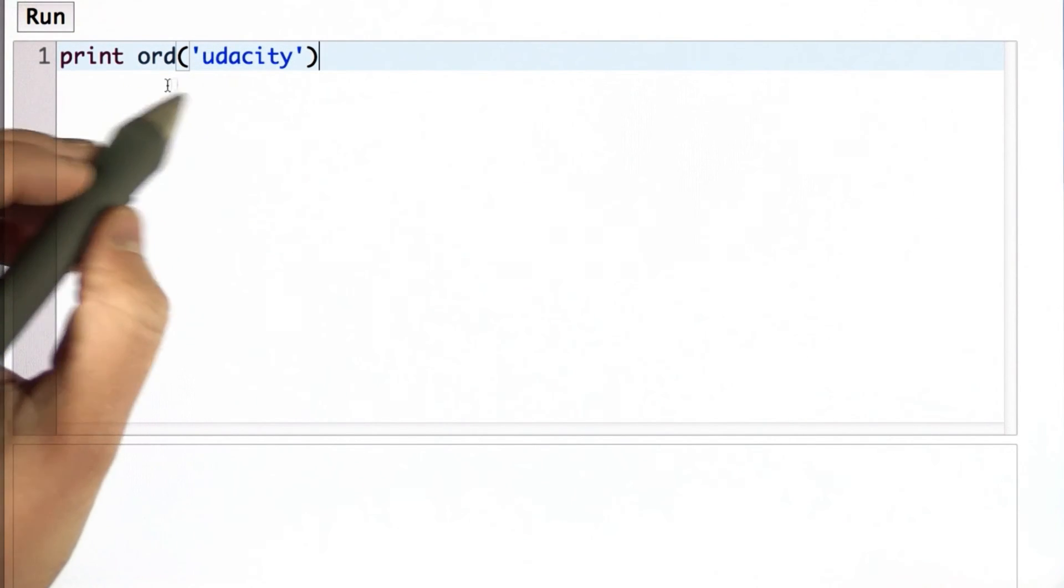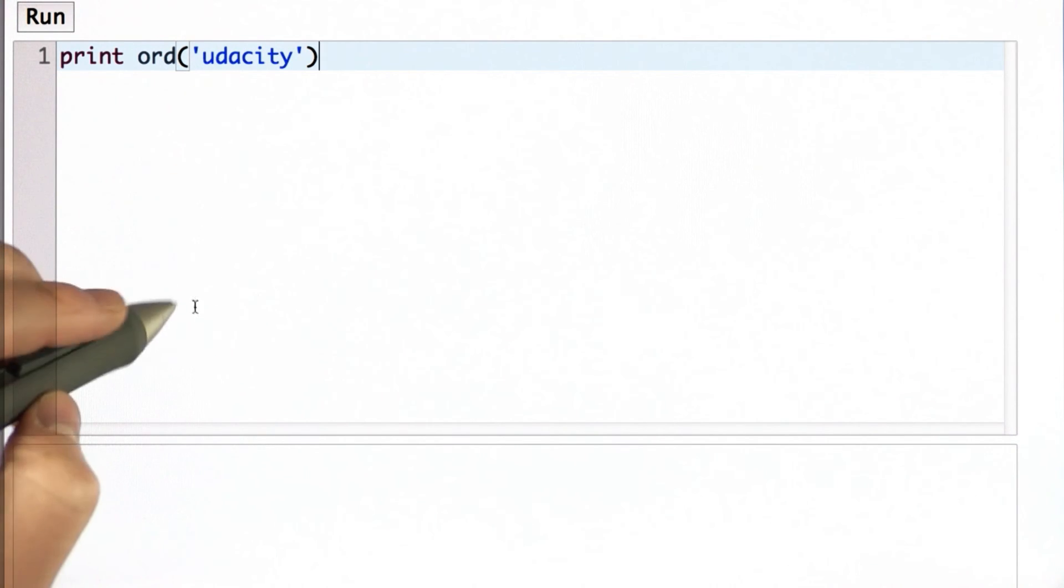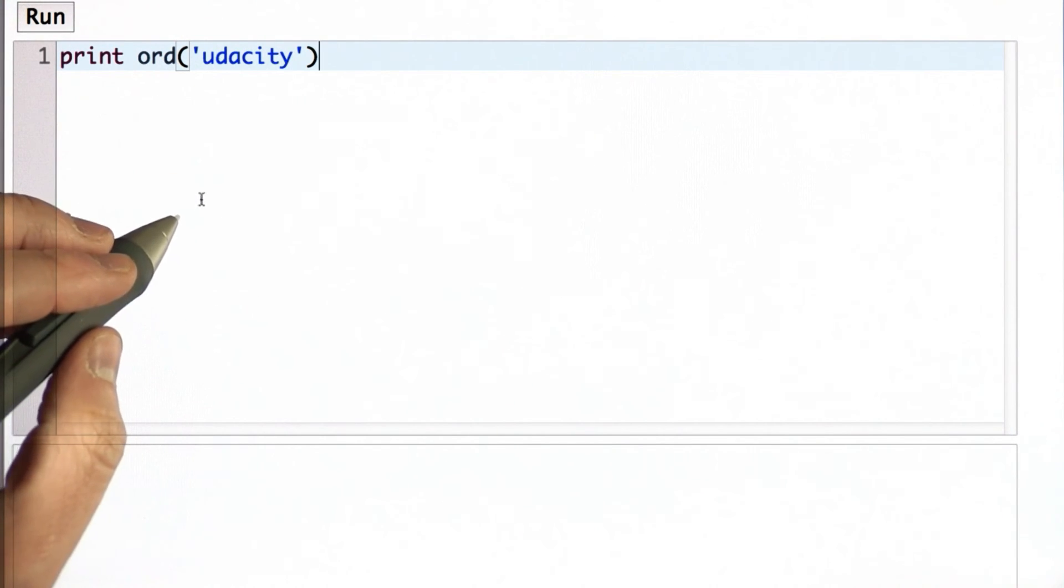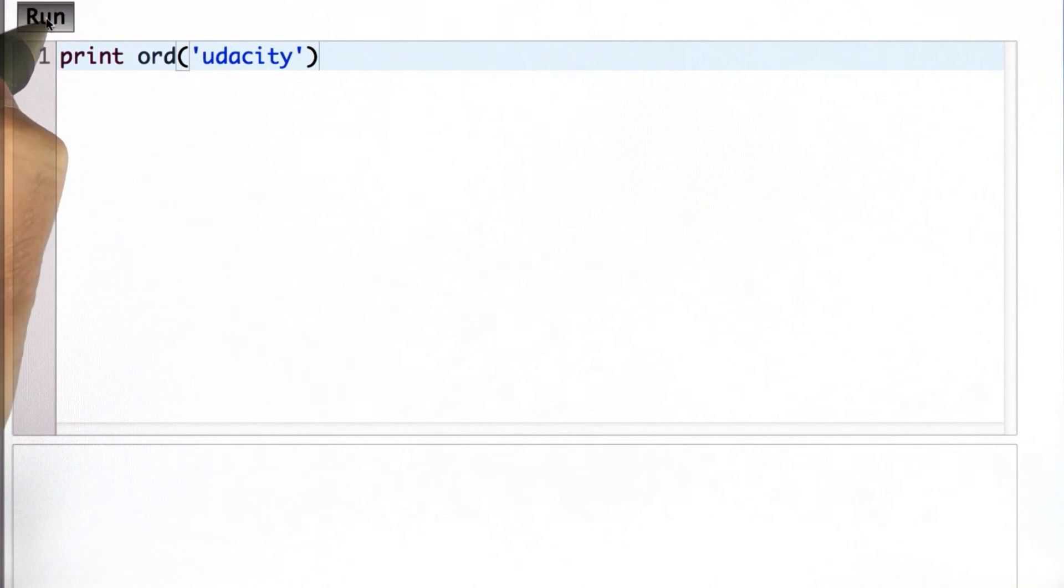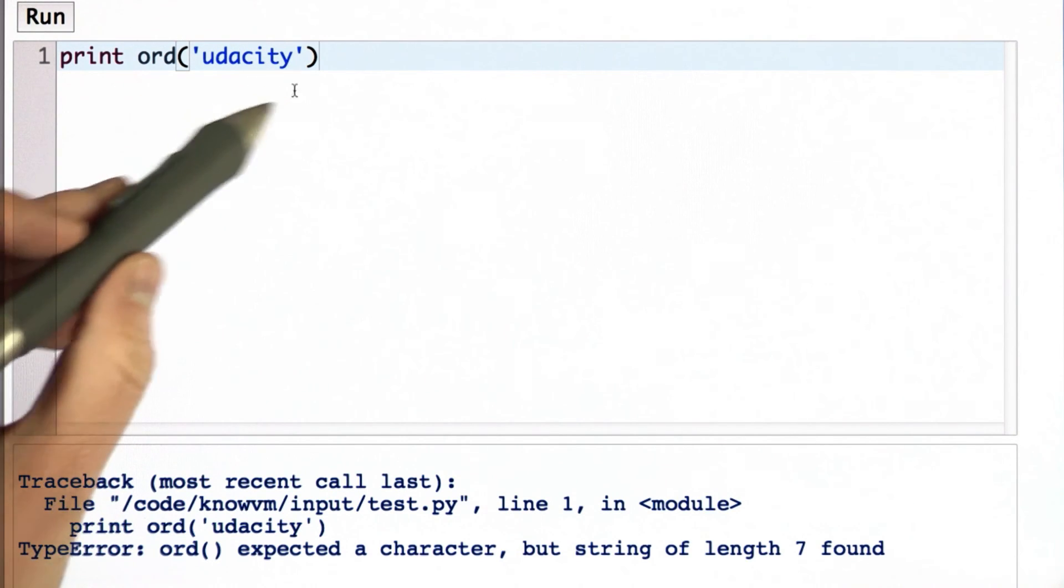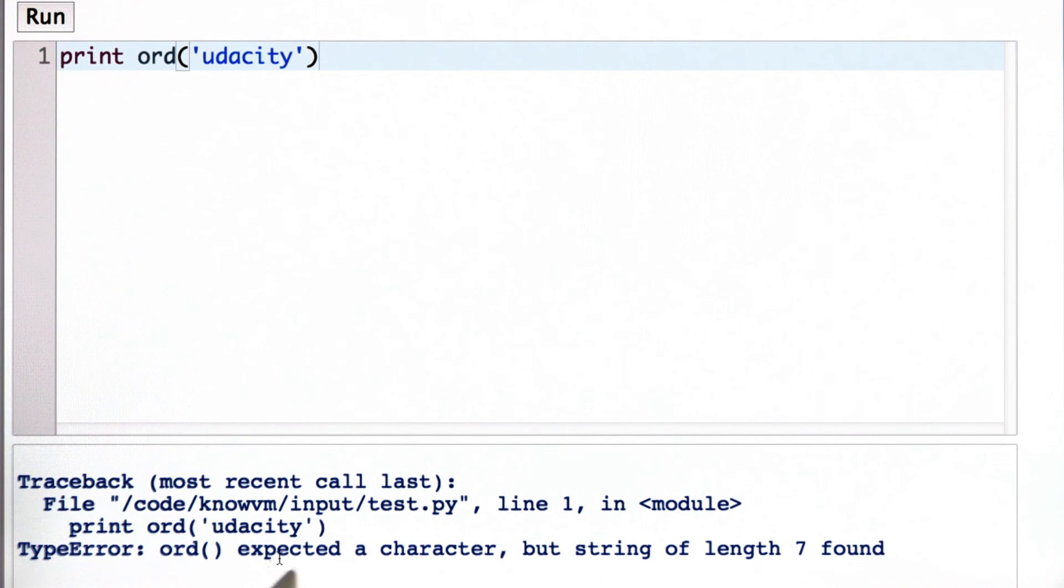The limit of ord is it only works on one-letter strings. If it provided a mapping from any string to a number that would be useful for a hash table, well then we'd be done, but it doesn't do that. If we try running it on a multi-letter string, we get an error. It says that ord expects a single character, but it got a string of length 7. So we're going to need to use ord only on single-letter strings.